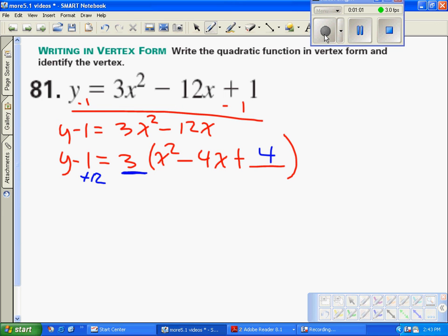We now have y plus 11 equals 3 times, and this is a perfect square, so this is going to be x minus 2 quantity squared.